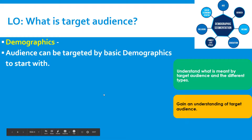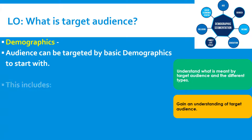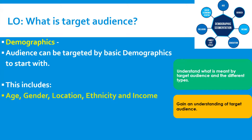What we're looking at now is what we call demographics. Demographics are things like the age of the target audience, the gender, location, ethnicity, and the income of the target audience. If you were creating a product, you need to think about how old are the people it's aimed at, what's the gender, location, and income.